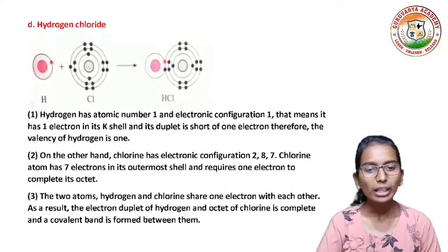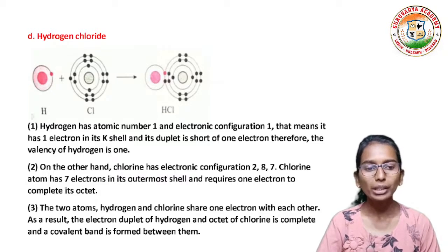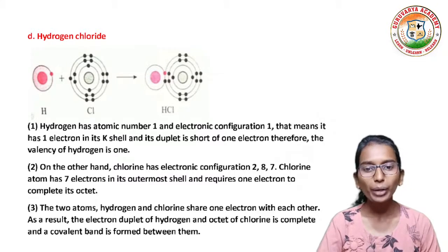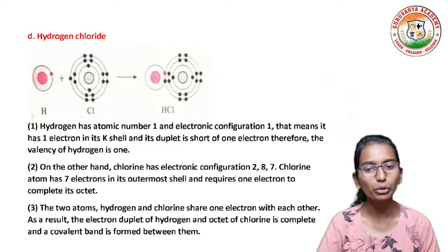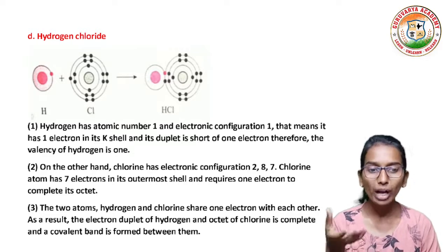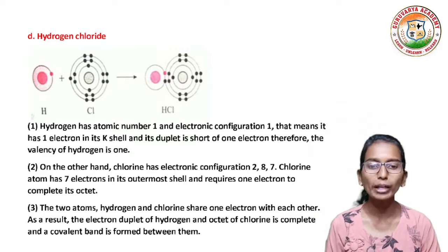For hydrogen chloride: hydrogen has atomic number 1 and electronic configuration 1, with 1 electron in its K shell; its duplet is short of 1 electron, so the valence of hydrogen is 1. Chlorine has electronic configuration 2,8,7; chlorine atom has 7 electrons in its outermost shell and requires 1 electron to complete its octet. The two atoms — hydrogen and chlorine — share 1 electron with each other. As a result, the duplet of hydrogen and the octet of chlorine are completed and a covalent bond is formed between them.